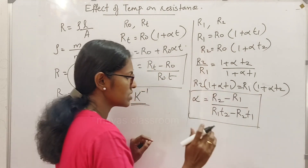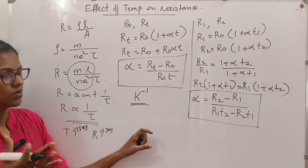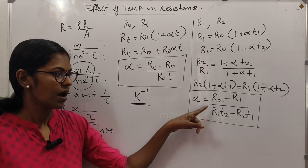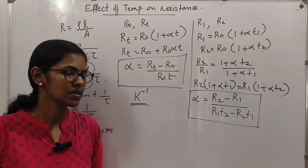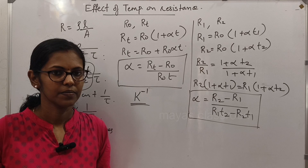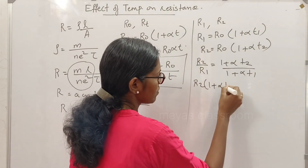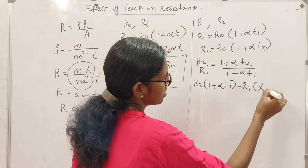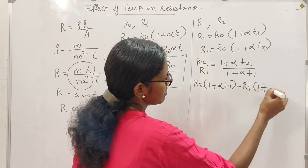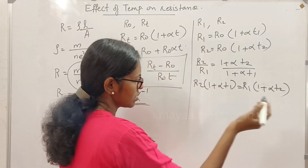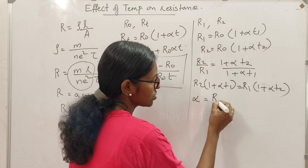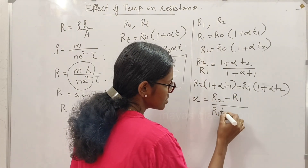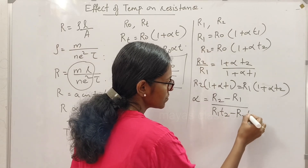Cross multiplying and simplifying, alpha is equal to R2 minus R1, divided by R1 T2 minus R2 T1. This gives us the temperature coefficient of resistance in terms of resistances at two different temperatures.